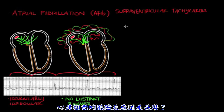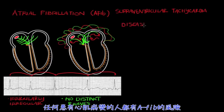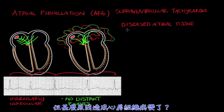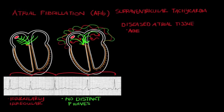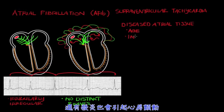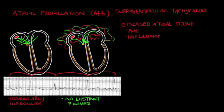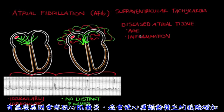What are the risk factors for atrial fibrillation? Anyone who has diseased atrial tissue has an increased risk for AFib. Atrial tissue becomes diseased with old age — just as the skin in your body gets old, so does your atrial tissue. Also, anything that causes atrial tissue to become inflamed can cause AFib, such as a recent heart procedure.